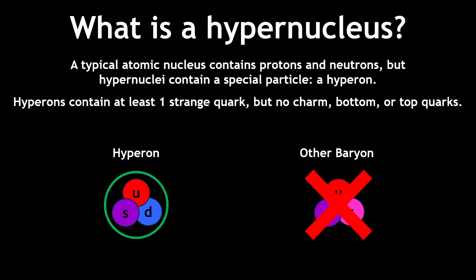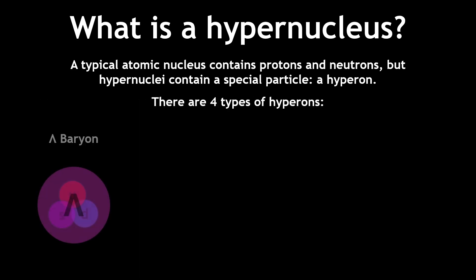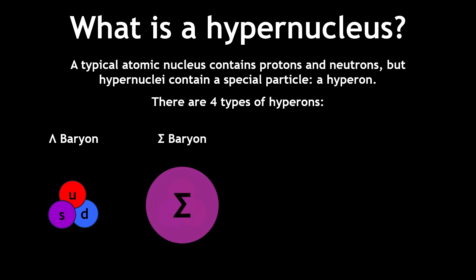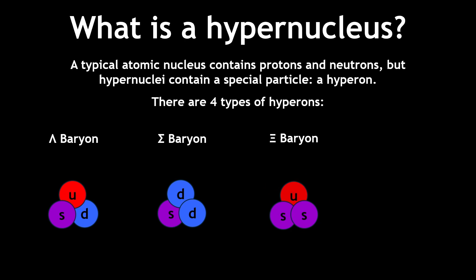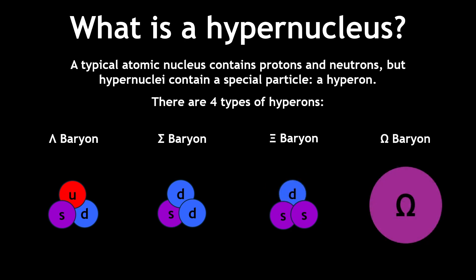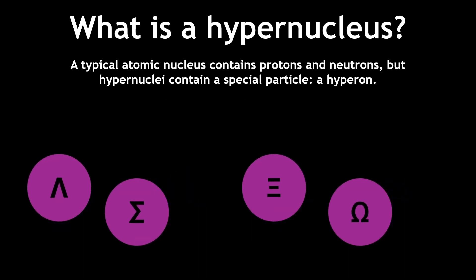There are four types of hyperons: the lambda baryon, composition of up-down-strange; the sigma baryon, with many compositions; the xi baryon, with many compositions; and the omega baryon, composed of three strange quarks. Each of these hyperons tend to decay into baryons with fewer strange quarks.